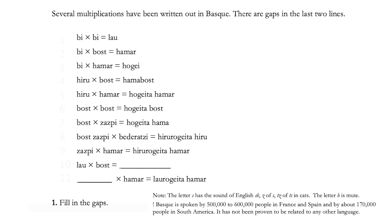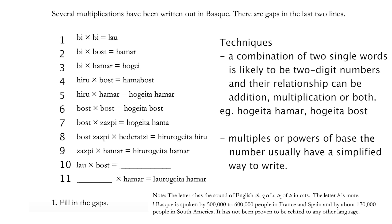Let's label the equations first. Since we're not sure which base this language system is in, we can employ a little technique. If we see a combination of two single words, we can think that they are either added up together or multiplied together, or both, and very likely to be a two-digit number. In this case, 'hogeita hama' and 'hogeita bost' are very likely to be two digits. Furthermore, the power or multiple of the base number has a simplified way to write. For example, in base 10, 10 squared is 100, and 2 times 10 is 20.